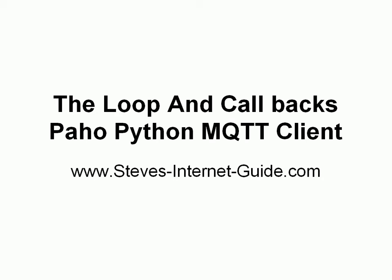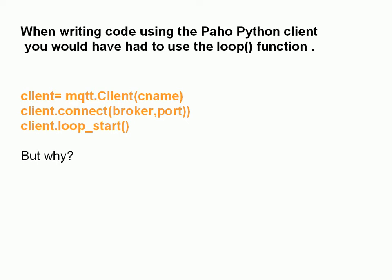Hi, Steve here from Steve's Internet Guide, and in this video we're going to take a look at the loop and callbacks in the Python MQTT client. Now, when you write client code using the Python client, you would have had to use the loop function, and often you'll see a construction like this. You create a client object, then you connect to the broker, and then you start a loop. But why do you start a loop?